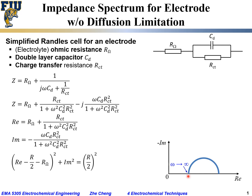When the radial frequency ω goes towards infinity (very high frequency), the denominator becomes infinity and the real part fraction goes to zero, so we are at the high-frequency intercept at R_ohm. The distance from the origin to this intercept gives us the ohmic resistance R_ohm for this Randles cell.